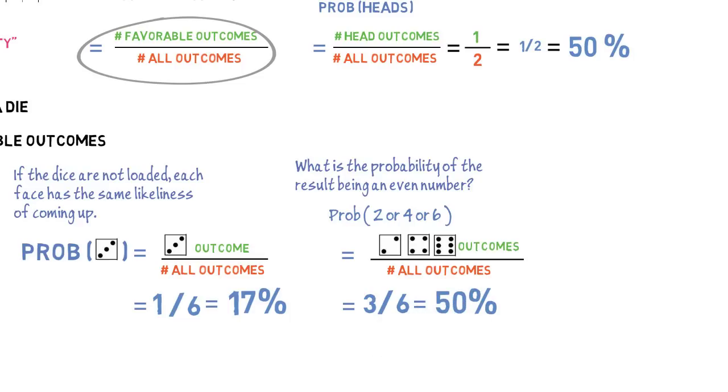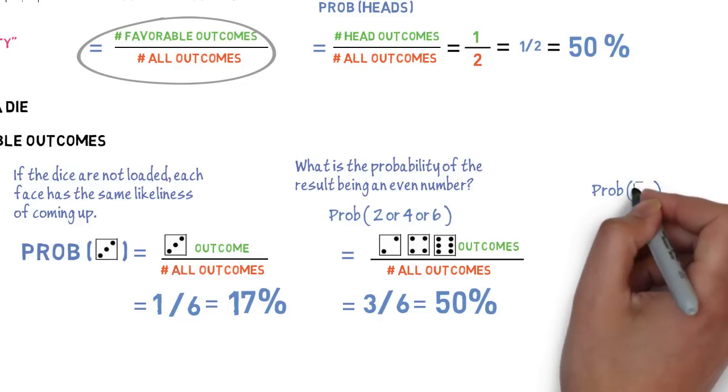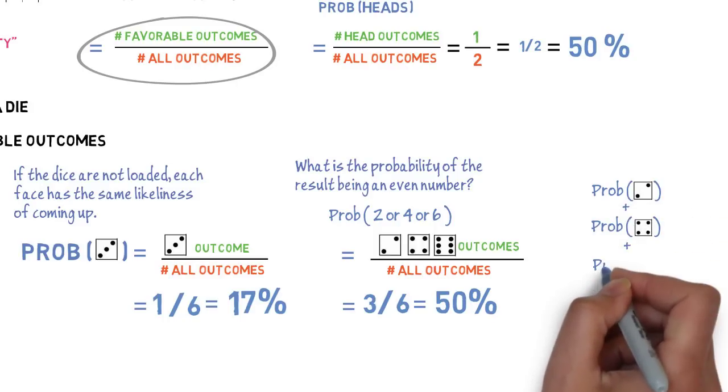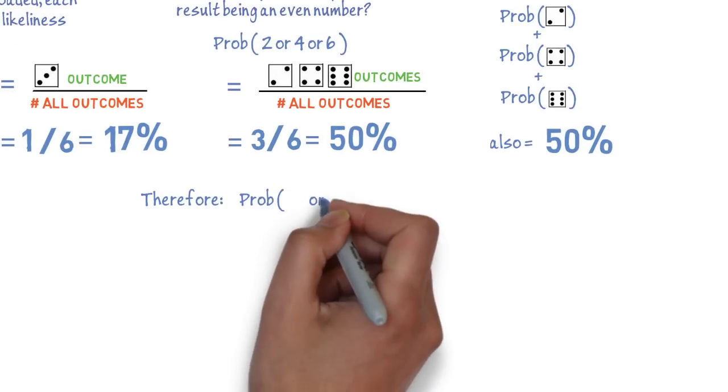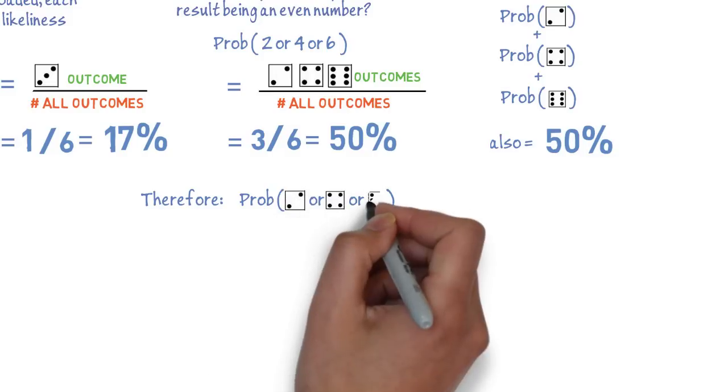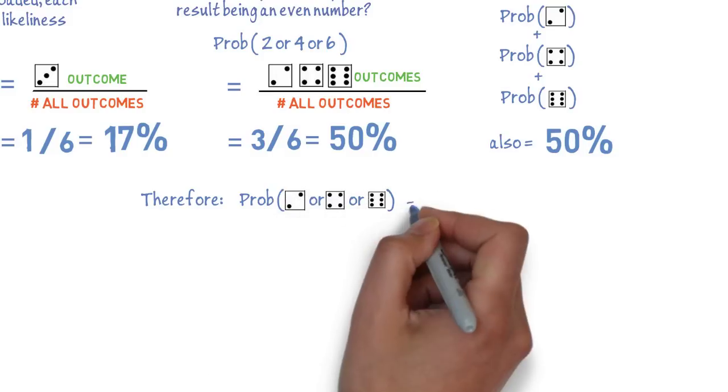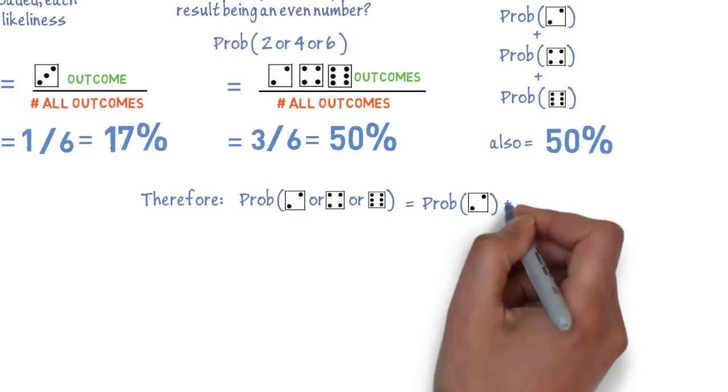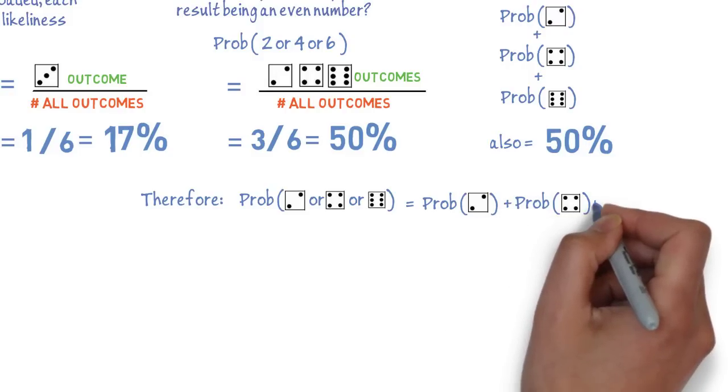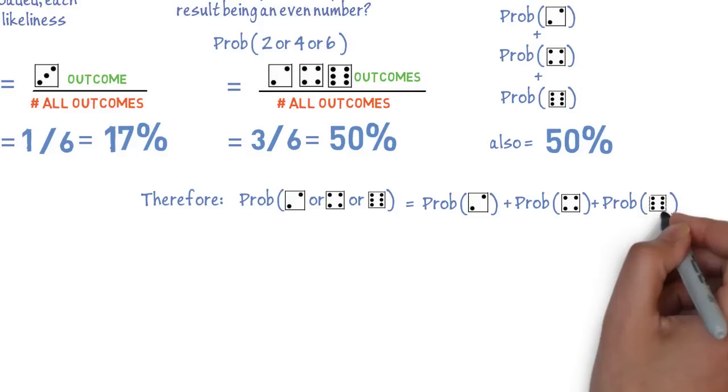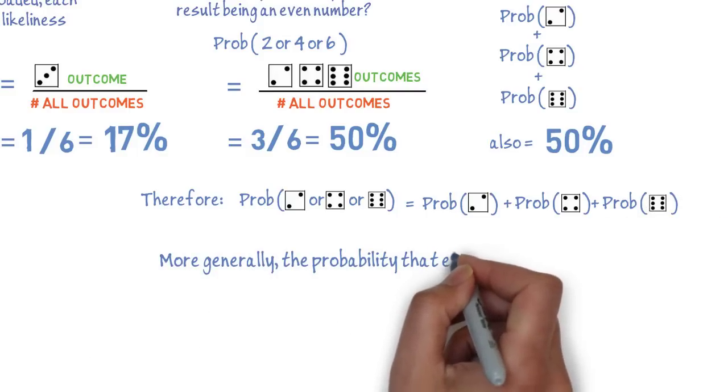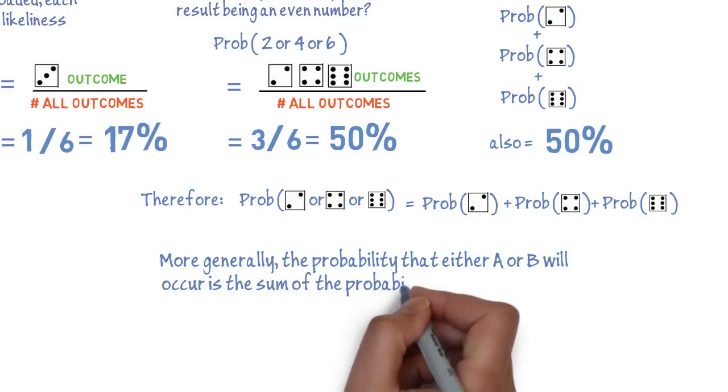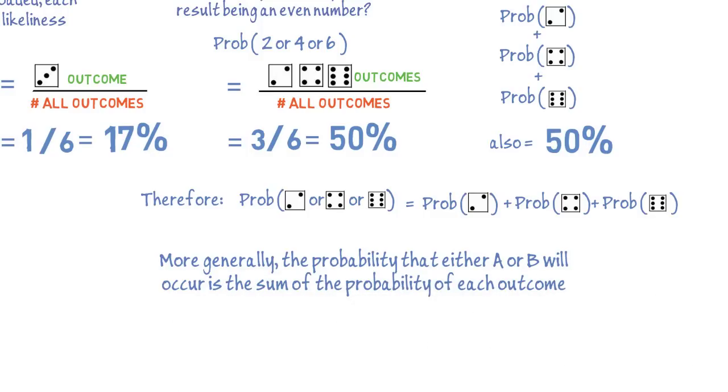On the other hand, the probability of two plus the probability of four plus the probability of six is also 50%. Therefore, the probability of two, or four, or six equals the probability of two plus the probability of four plus the probability of six. More generally, the probability that either A or B will occur is the sum of the probability of each outcome.